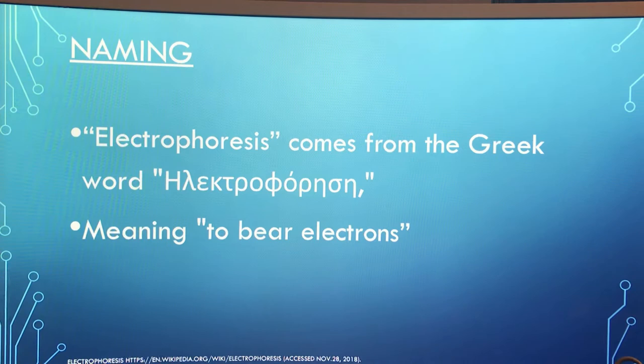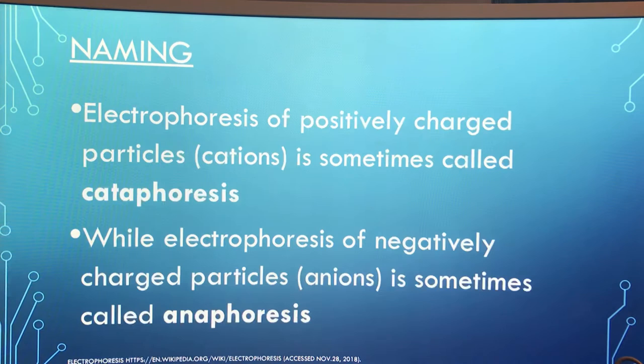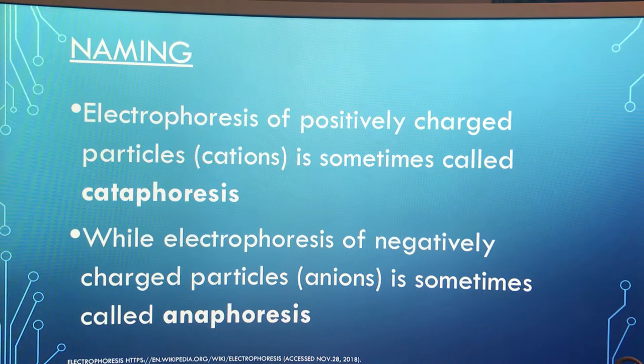Electrophoresis comes from a Greek word meaning to bear electrons. Electrophoresis of positively charged particles, or cations, is sometimes called catephoresis, while electrophoresis of negatively charged particles, or anions, is sometimes called anaphoresis.